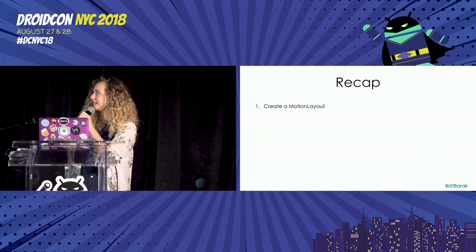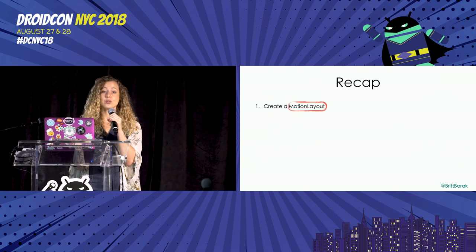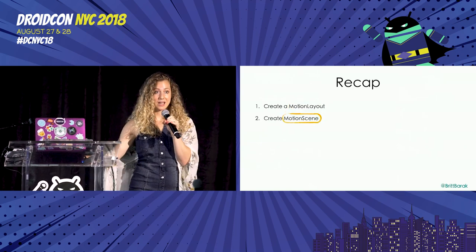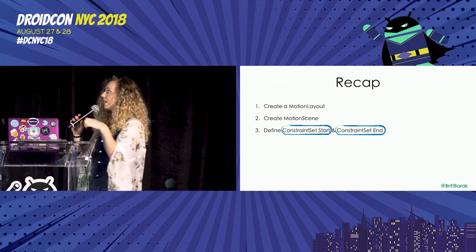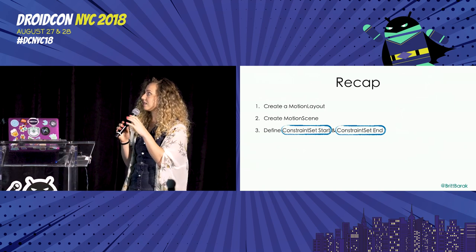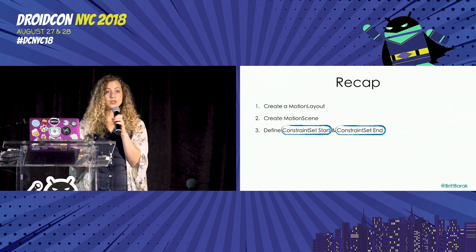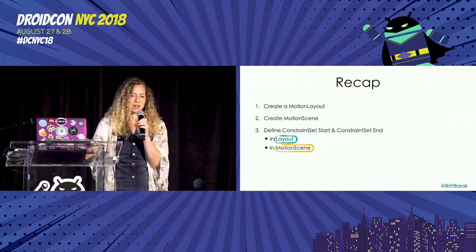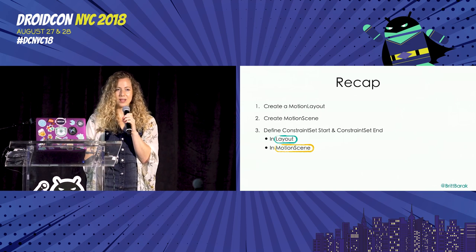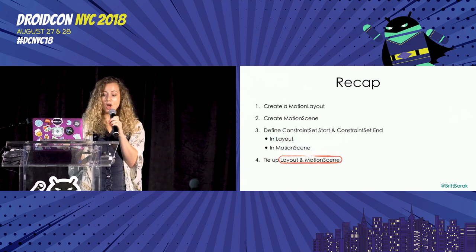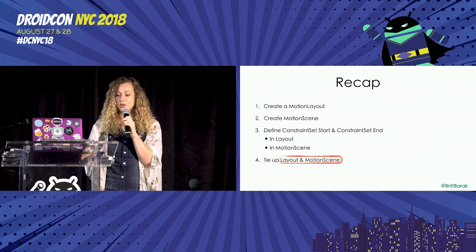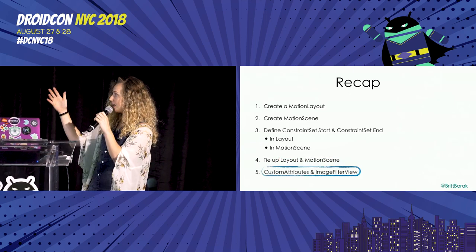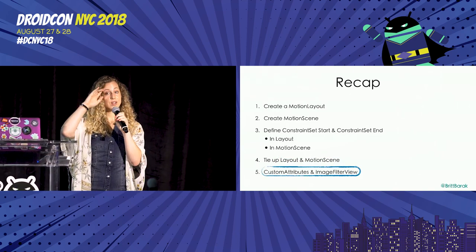To recap: create a motion layout, create a motion scene, define the first constraint set and the end constraint set. Start with layouts — that's the simplest approach — then move into the motion scene to add custom attributes. Tie the layout and motion scene together and add custom attributes and image filters as needed.